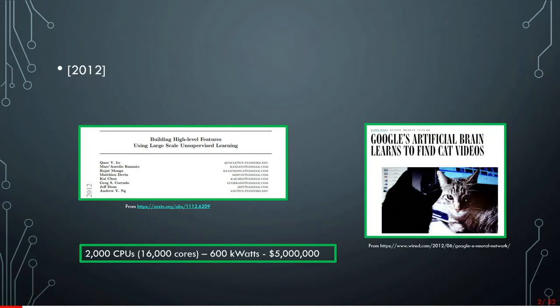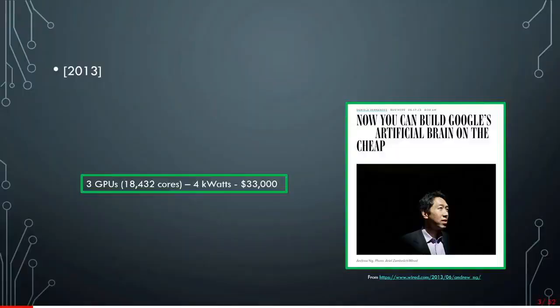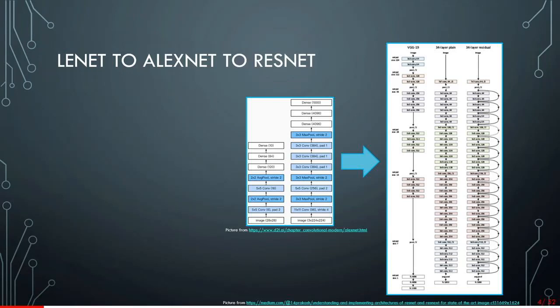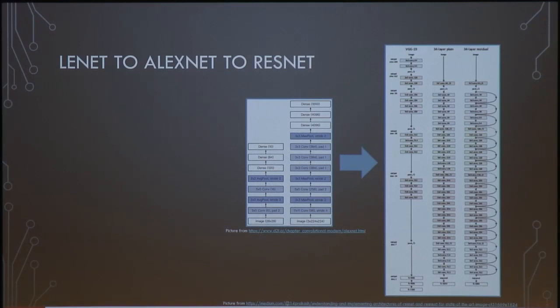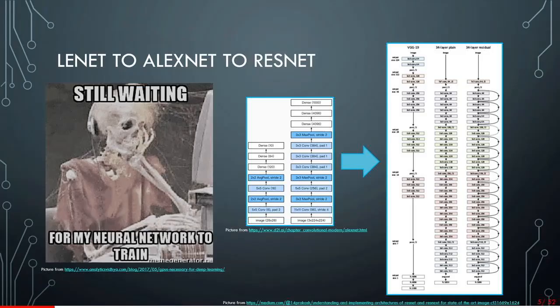We have come a long way — from recognizing cats in videos with investments like $5 million on CPUs from Google, to running models on GPUs and reducing that cost so it is affordable for research groups across the globe, not just big industries. We went from LeNet by Yann LeCun to AlexNet to much larger models like residual networks — 34-layer and 151-layer versions.